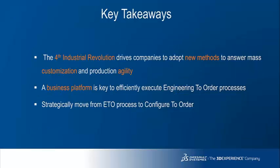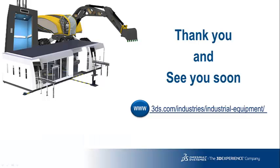To conclude this presentation, here are a few takeaways. The fourth industrial revolution drives companies to adopt new methods to address mass customisation and production agility. To efficiently execute engineering-to-order processes, you need a single version of the truth, which requires having a business platform as a unique data source for all your company stakeholders. Finally, the next challenge for industrial equipment companies, as it has been the case in the automotive industry, will be to strategically move from an ETO to a configure-to-order process. Thank you for attending this webinar — don't hesitate to ask us any questions on our social media accounts and see you soon on our website.